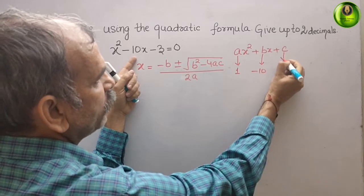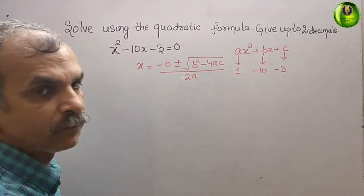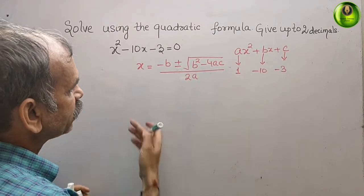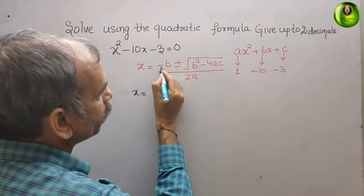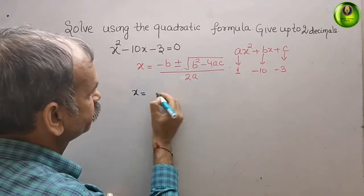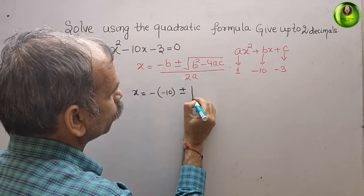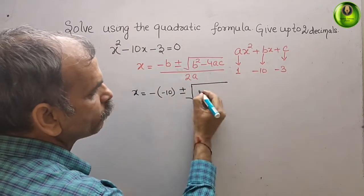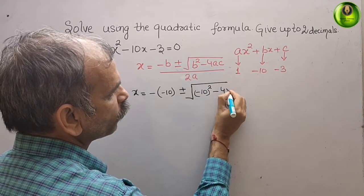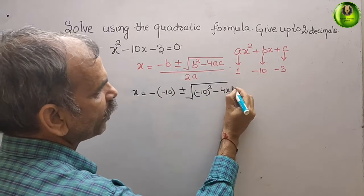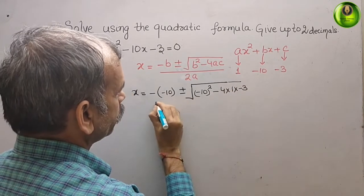Now substitute these values. We get x = -(-10) ± √((-10)² - 4(1)(-3)) / 2(1). Minus into minus is plus, so we get 10 ± √(100 - (-12)) / 2.